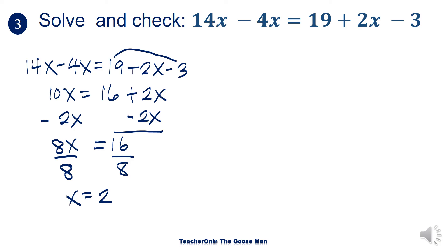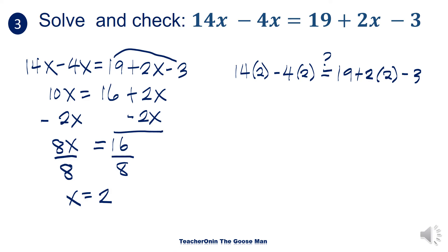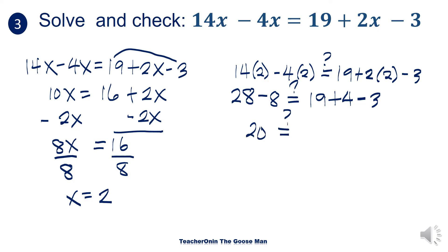Let's verify if the answer is correct. I have 14 times 2 minus 4 times 2. Is it the same as 19 plus 2 times 2 minus 3? Notice that I substituted x equal to 2. So I have 28 minus 8. Is it the same as 19 plus 4 minus 3? So 28 minus 8 is equal to 20. Is it the same as 23 minus 3? We can say that 20 is equal to 20. Therefore, x is equal to 2.